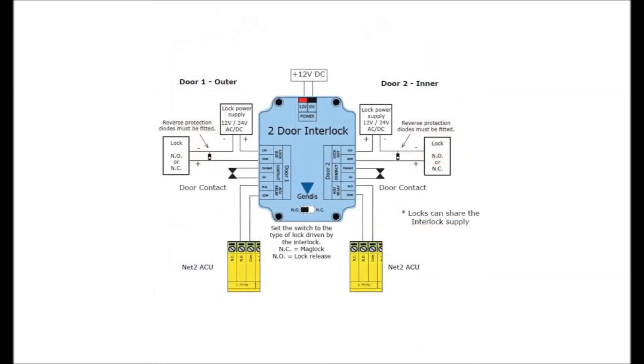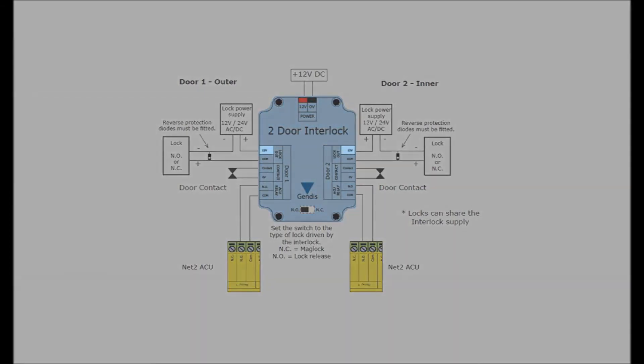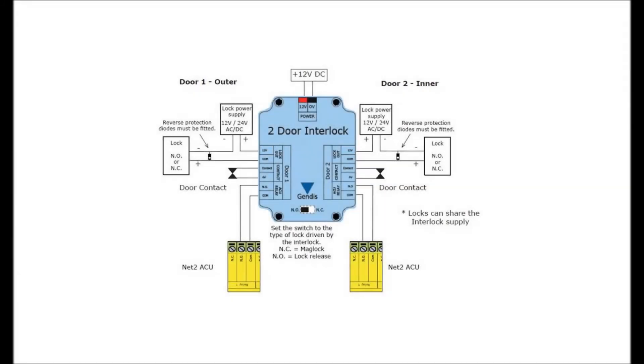Taking a closer look at the interlock again, we can see how the device is laid out. On both door 1 and door 2, it is worth noting that the 12V label refers to the connection of 12V or 24V from the lock, rather than there actually being 12V present at that location. In relation to this, you can use a 24V lock, but you will need 12V for the interlock unit power.